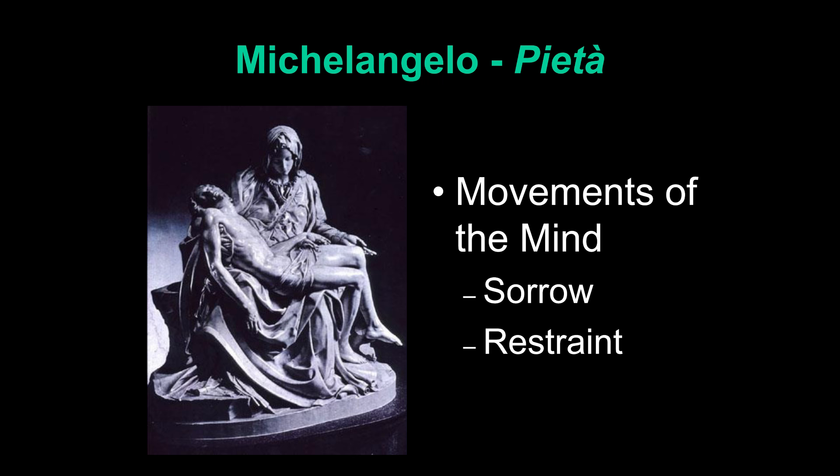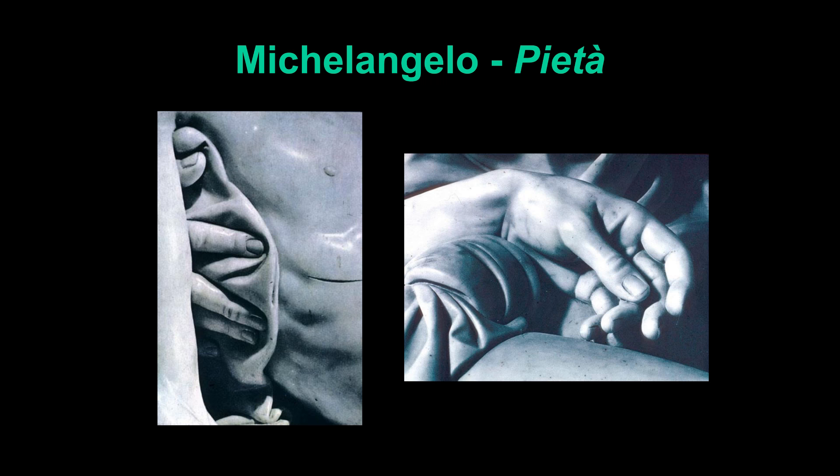Mary displays the body of Christ for our veneration — one arm is out, the other holds Christ with the winding cloth or shroud between her hand and Christ. The wound of Christ is shown very cleanly and subtly — not with paint or globules of blood or three-dimensional droplets. Her fingers pointing to it draw your attention, but there's no gory detail. This is idealized, perfected, and restrained.